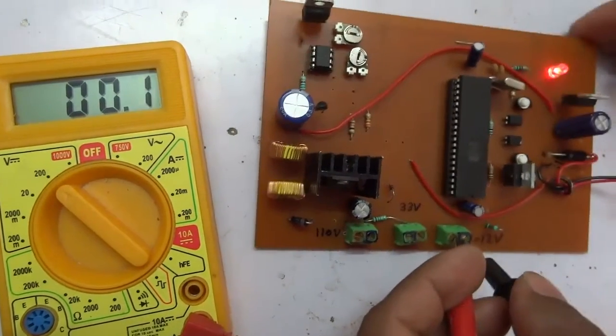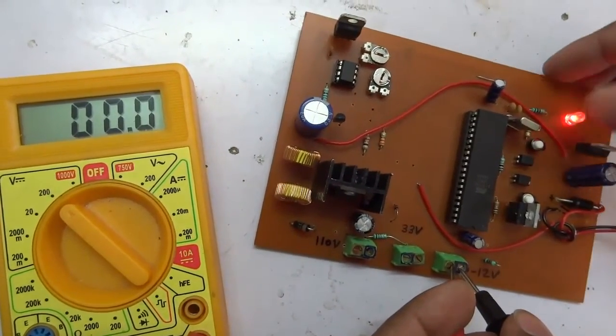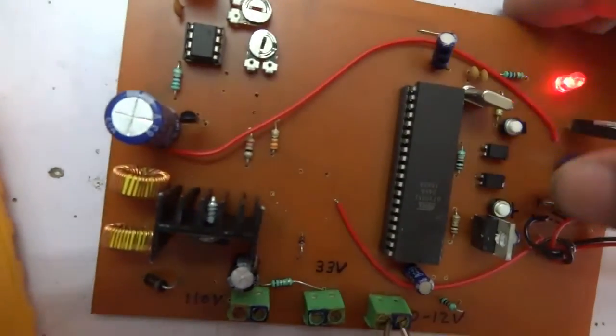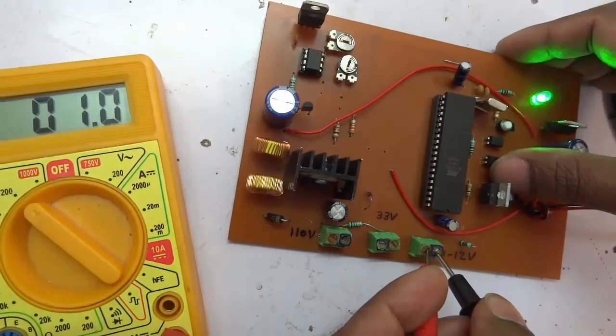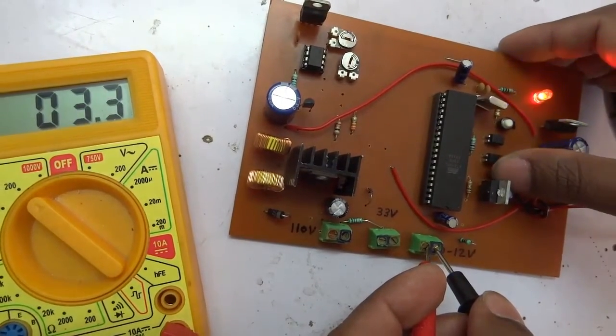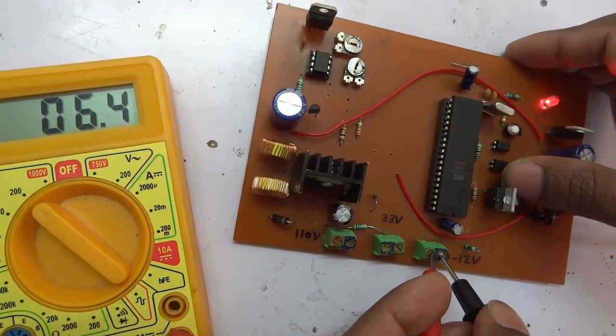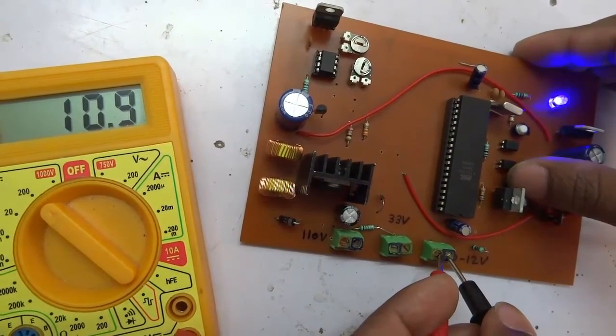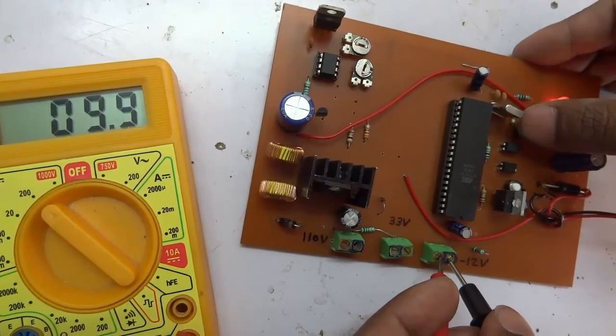Now this variable voltage can be adjusted by these two buttons. One is to increase the voltage and second is to decrease the voltage.